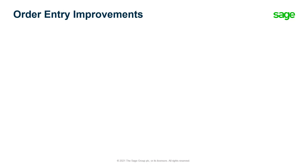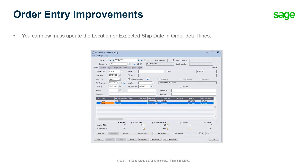Starting with version 2022 of SAGE 300, you now have a convenient option to set the expected ship date and location for all details on an order. Two new buttons are available in the Order tab of the Order Entry screen: Set Ship Date, to set the expected ship date for all details to match the order's ship date, and Set Location, to set the location for all details to match the default location for the order.